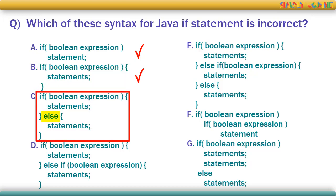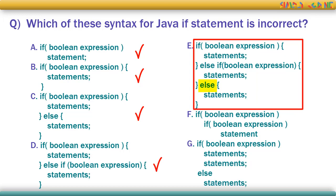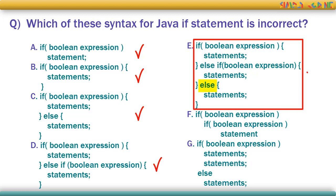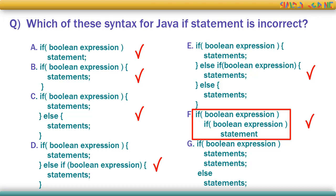The if-statement can have an optional else statement, which is executed when the boolean expression is false. In the else part also, you can either write a single statement without curly brackets or with curly brackets. You can also have an extended if or else-if ladder when you have multiple conditions to check, adding as many else-if as you like. The else statement acts like a default and you can have only one else, only at the end.